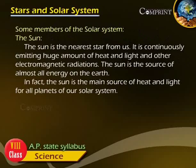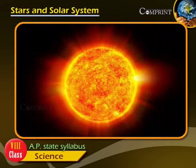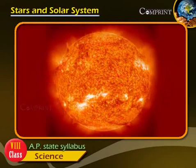Some Members of the Solar System: The Sun. The Sun is the nearest star from us. It is continuously emitting huge amounts of heat and light and other electromagnetic radiations. The Sun is the source of almost all energy on the Earth.